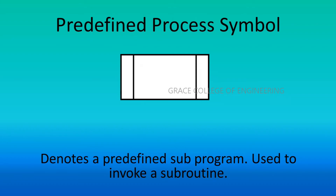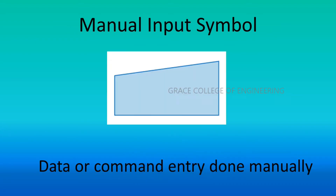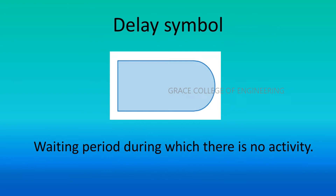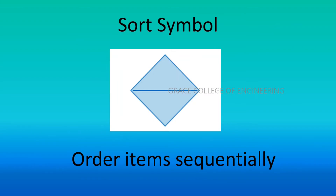The predefined process symbol denotes a predefined sub-program and is used to invoke a subroutine. The manual input symbol indicates data or command entry done manually. The manual operation symbol indicates a step that must be done manually, not automatically. The delay symbol represents a waiting period during which there is no activity. The sort symbol is used for ordering items sequentially.